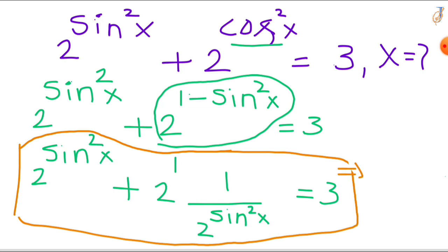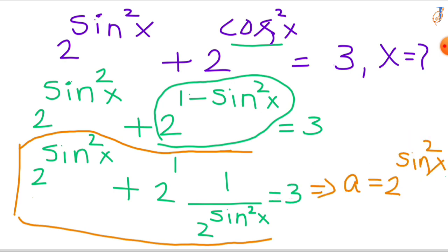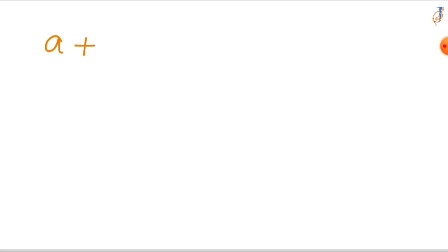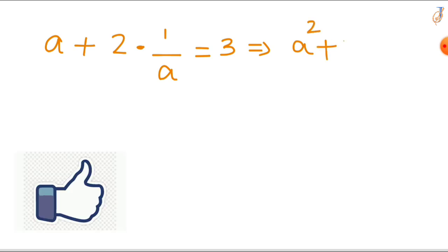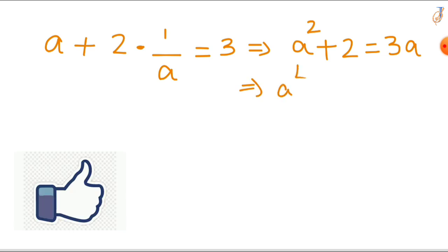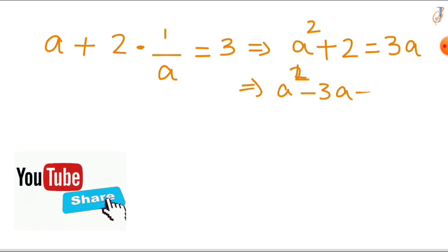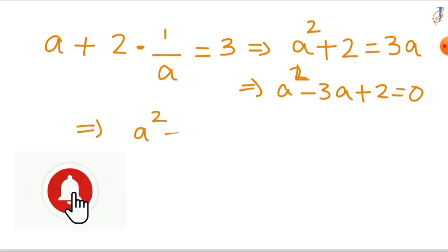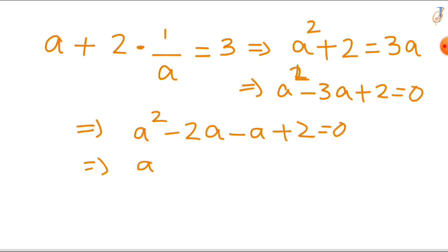To simplify, let a equal 2 raised to the power of sin²x. Then our equation turns into a plus 2 times (1 divided by a) equals 3. Multiplying both sides by a and rearranging gives a² plus 2 equals 3a, so it becomes a² minus 3a plus 2 equals 0. Factoring the quadratic equation yields (a minus 1)(a minus 2) equals 0.